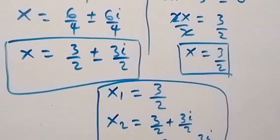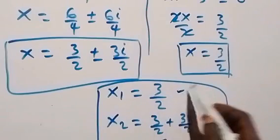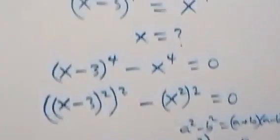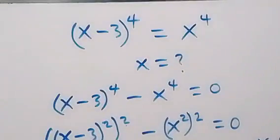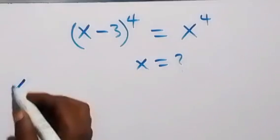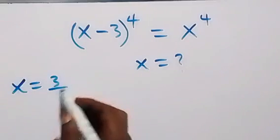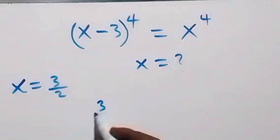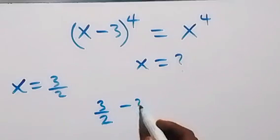Let's check if x equals 3 over 2 is valid. Substituting x equals 3 over 2 into the equation, the left-hand side becomes 3 over 2 minus 3, raised to power 4.